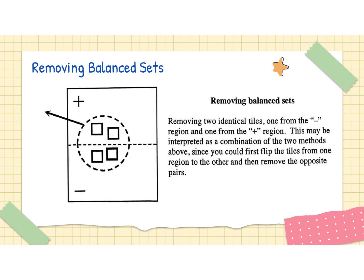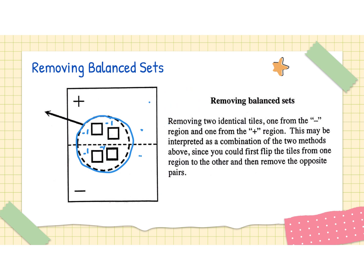The last piece that we did not talk about last week was the idea of removing balanced sets. A balanced set exists when there are tiles — like two negative one tiles — that live in opposite regions of your mat, or if there is a second side to the mat with the same tiles. When you have tiles that are the same in each positive and negative region, you can circle them, remove them, and the reason would be a balanced set.